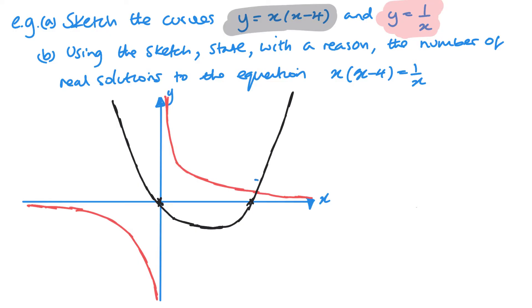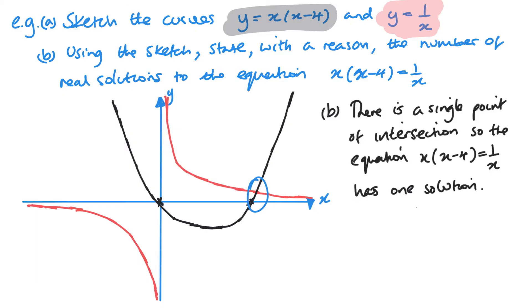Now I can clearly see from the graph I'm going to have one point of intersection. So I've done part A. Part B now I'm looking at just simply stating there is one point of intersection, therefore one solution to this equation. And my reason would be that there's clearly only one point of intersection on the graph. And here it is just written down for you.